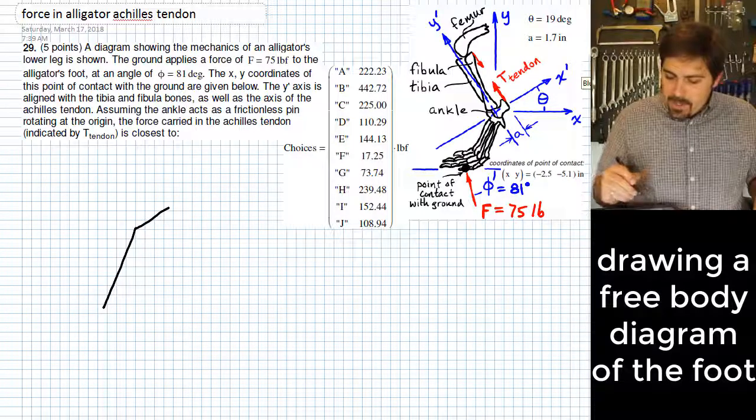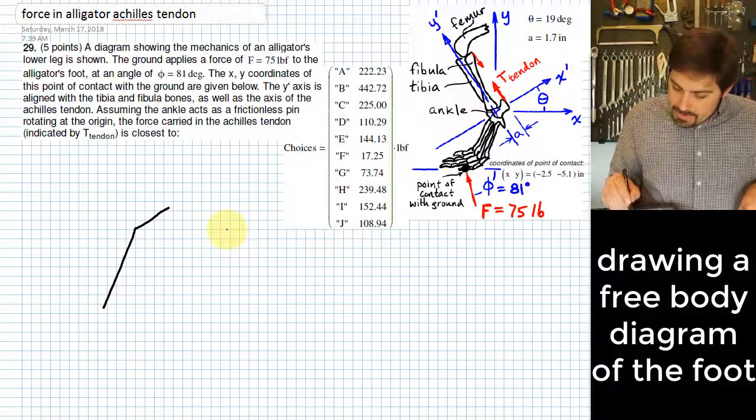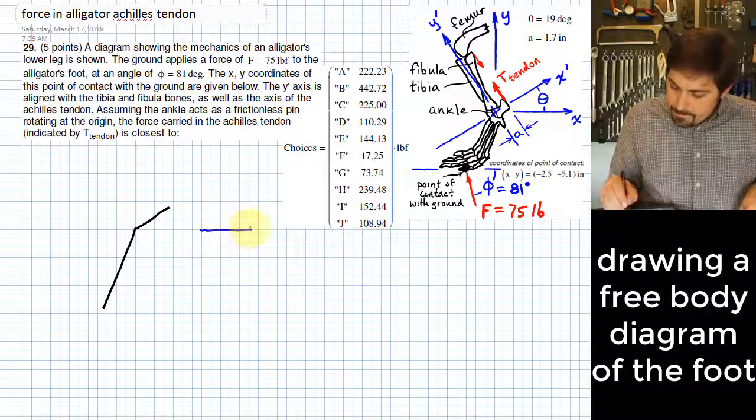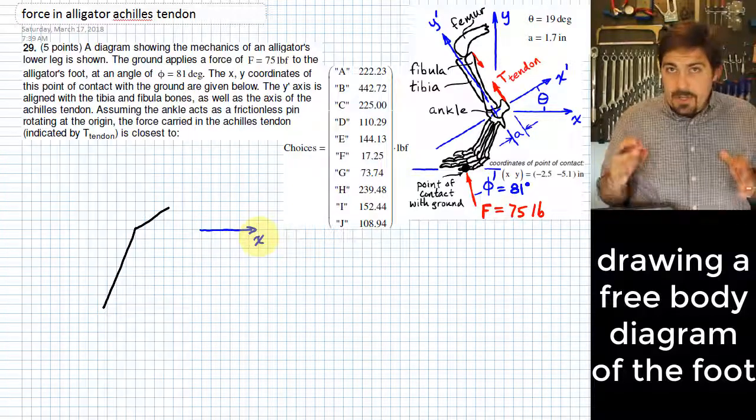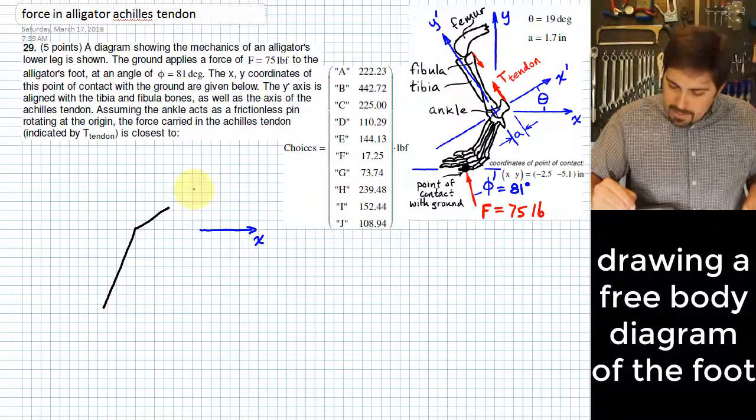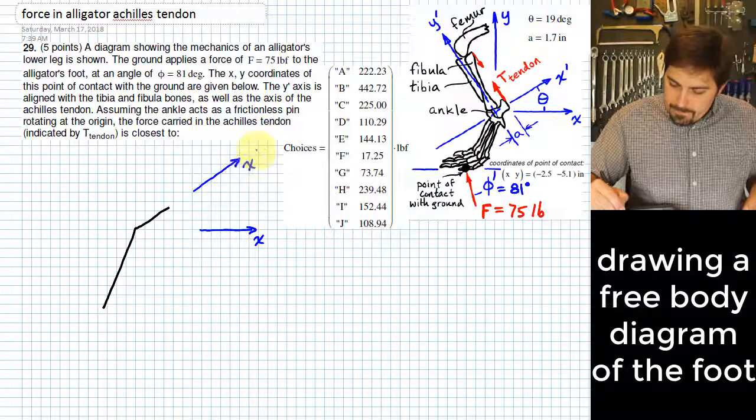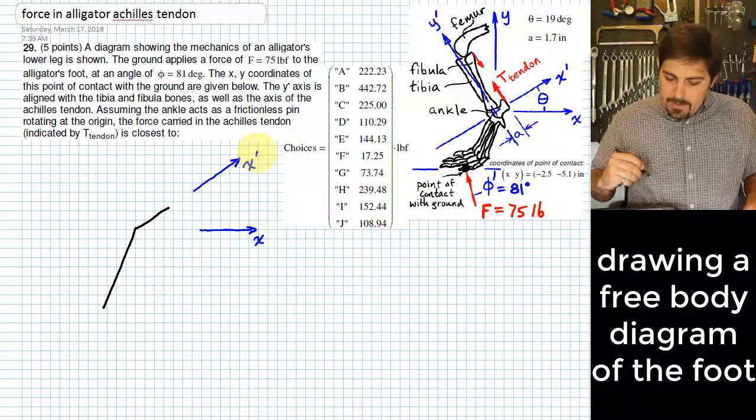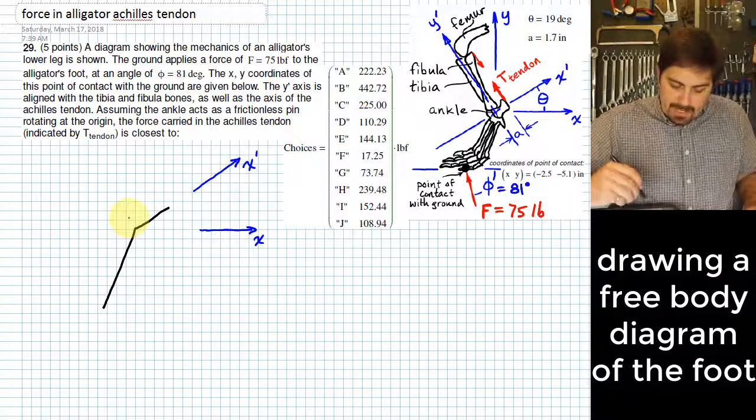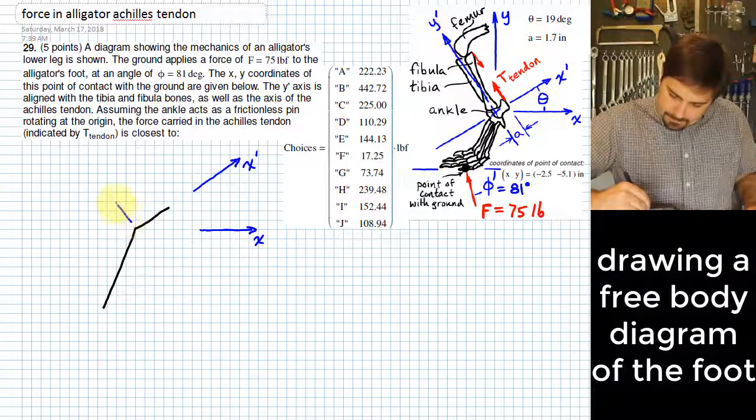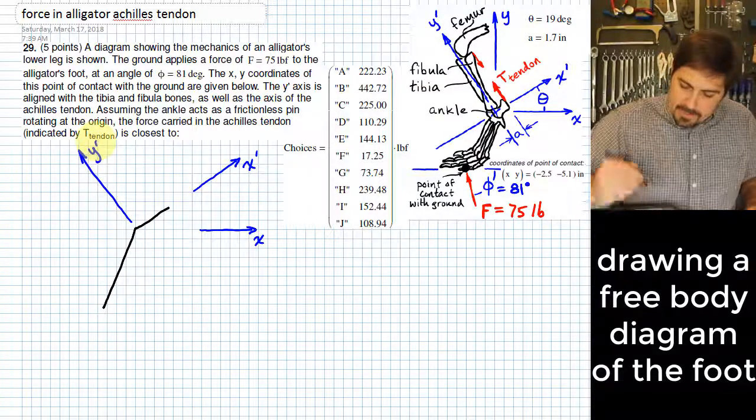Now we need to set up our axes. One of the axes that we have points out this way, that's our x-axis. But then we also have another axis that we're calling the x-prime axis, we're going to show that pointing out this way. Perpendicular to that x-prime axis, we have a y-prime axis, it points up like this.